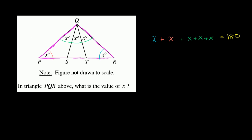So how many x's do we have on the left side right here? We have one, two, three, four, five. So we have five x's are going to be equal to 180.